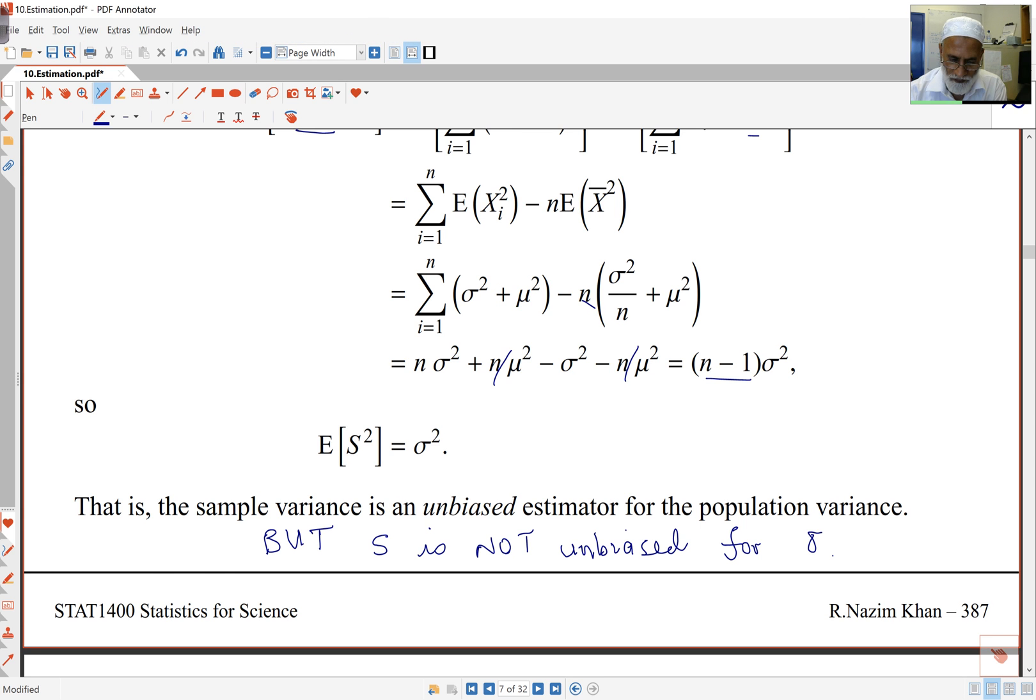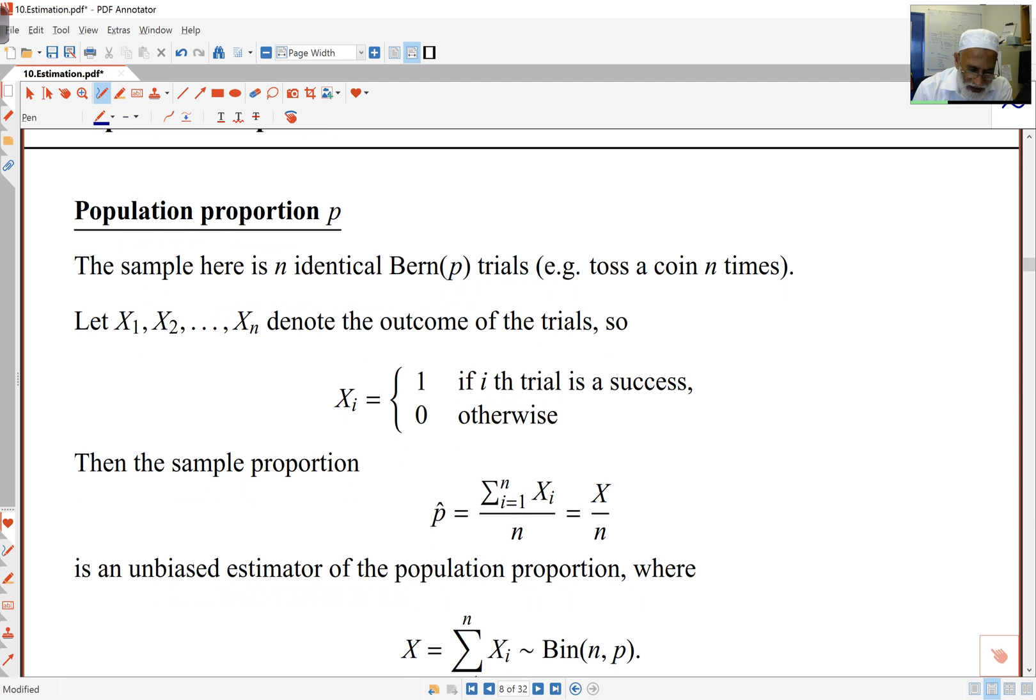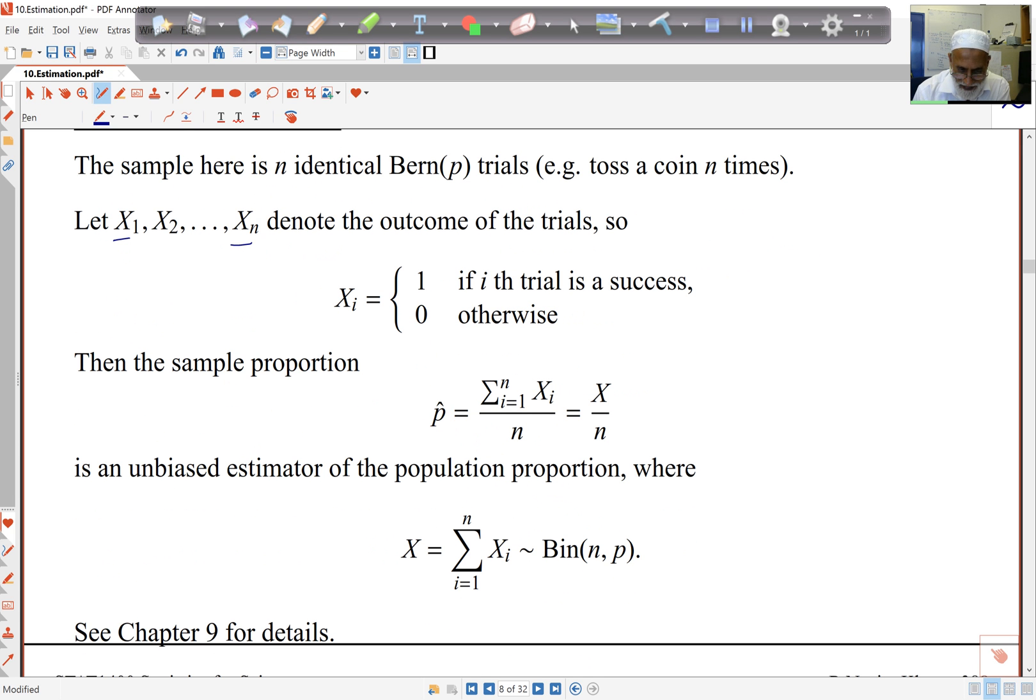Okay, so what about population proportion? Well, I can estimate population proportion by sample proportion. So we know from before that the sample here is n identical Bernoulli trials. The n trials here represent the individual samples, and each of them is Bernoulli, so we know that each of them is either one or zero depending on if you have success on that trial.